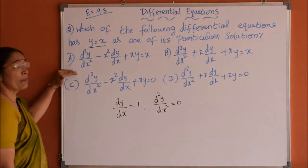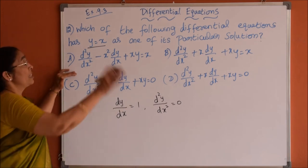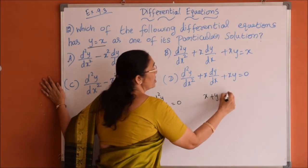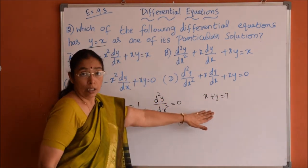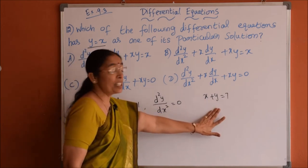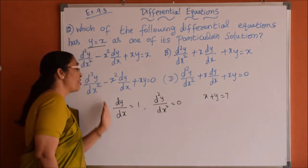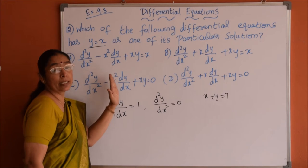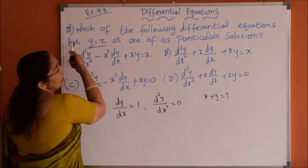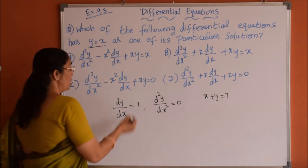What does it mean differential equation? See, similarly, suppose if I'm having x plus y equals 7. This is a polynomial equation. It will satisfy the values of x and y, right? In the same way, these differential equations should satisfy these values. So among these options, which option is satisfying these two values is having y equals x as one of its particular solutions. Let us substitute and see.